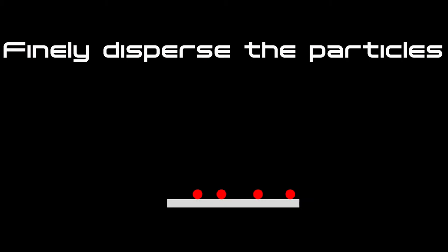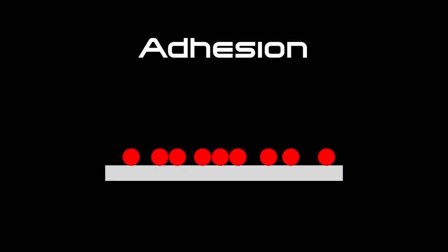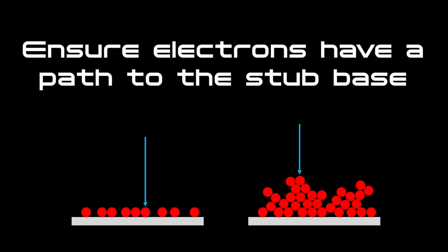When mounting nanoparticle samples for SEM, our main goal is to create as thin a dispersal of particles across areas of the substrate as possible. This allows the particles to adhere to the substrate and ensures that the negative charge generated by the electron beam has a pathway away from the surface of the particles to the substrate.